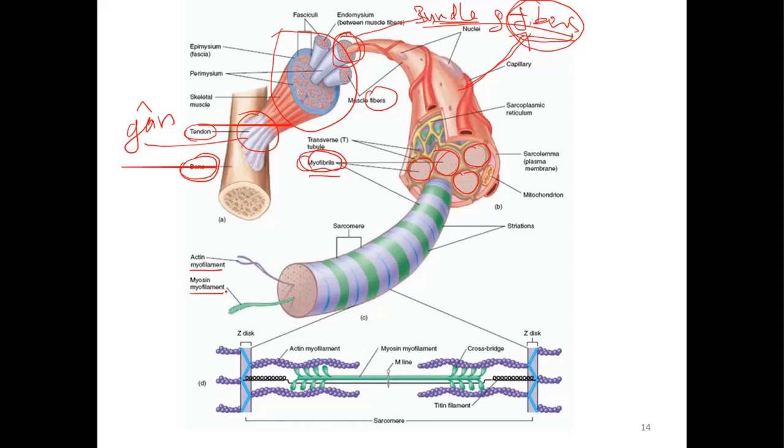Actin and myosin are actually proteins, so the diameter of filaments means the diameter of protein molecules. Okay, so if we look at one myofibril, you see repeated parts - one repeated section. And one section like this is called one sarcomere.